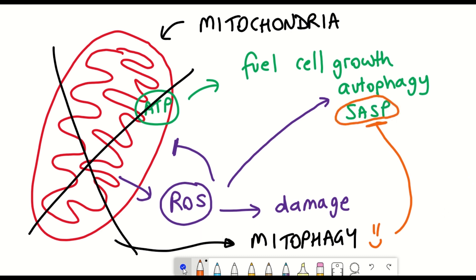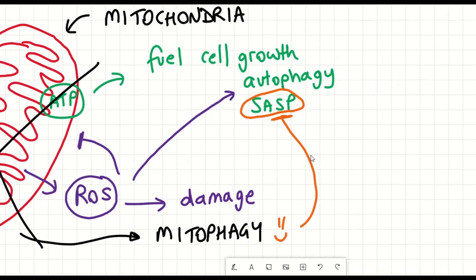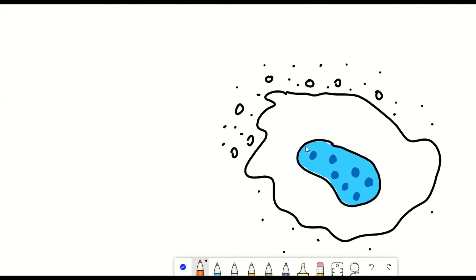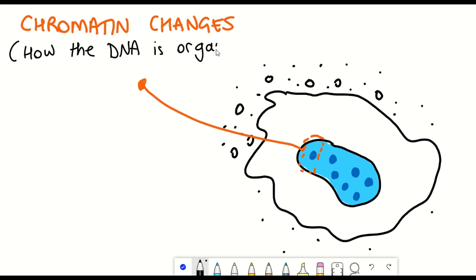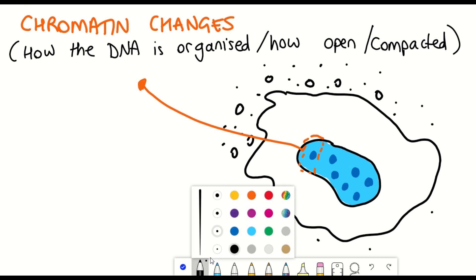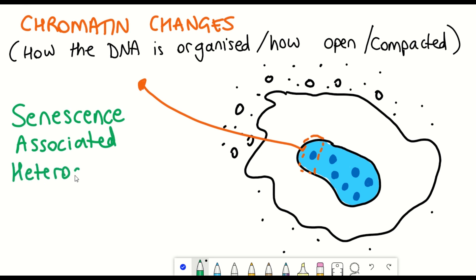So in addition to these four key hallmarks of senescent cells, there are also changes that are seen at the chromatin level. And so this is the DNA and its associated proteins and refers to the way in which DNA is organized within the cell and how open or compacted it is. And this can have implications for the stability of the genome and also for individual gene expression.